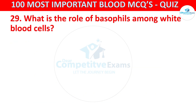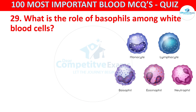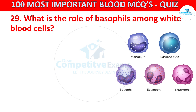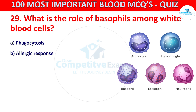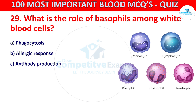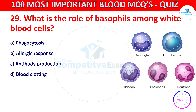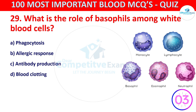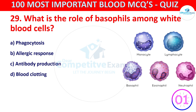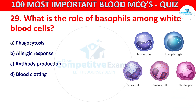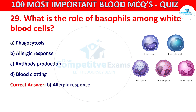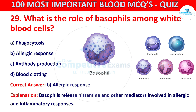What is the role of Basophils among white blood cells? Your options are Phagocytosis, Allergic response, Antibody production, or Blood clotting. The correct answer is B, that is Allergic response. Basophils release histamine and other mediators involved in allergic and inflammatory responses.